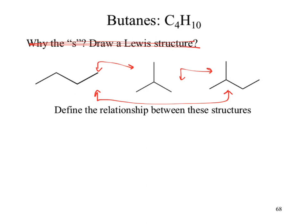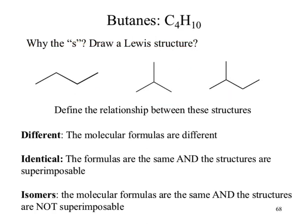If we take a look at the first two structures, where those atoms are located appears to be different, but they have the exact same formula. They're both C4H10. So if we look at formulas, can you really call them different? No, because they're the same formula. If we look at the last one, its formula is indeed different from the other ones. So we have different differences, which means we need better language to represent those differences.